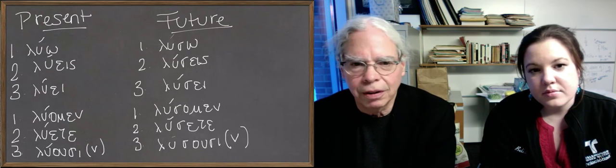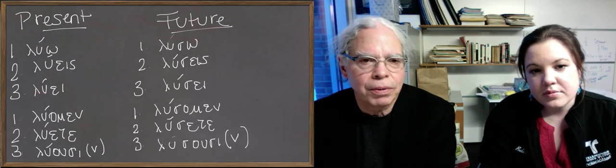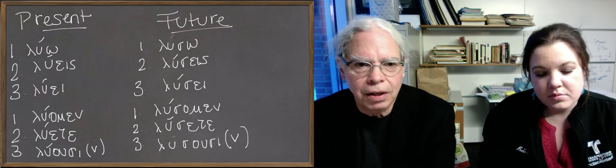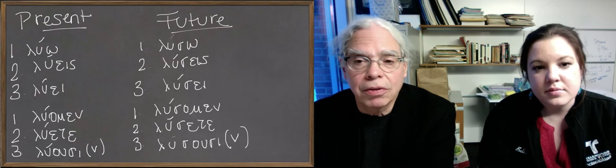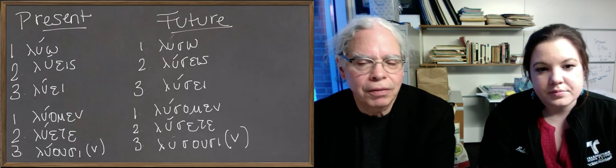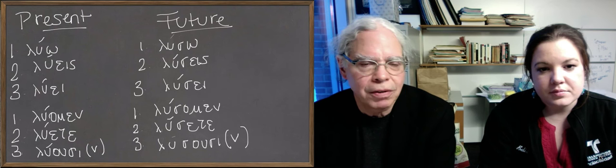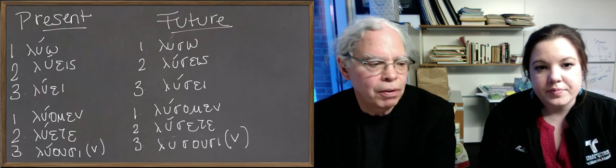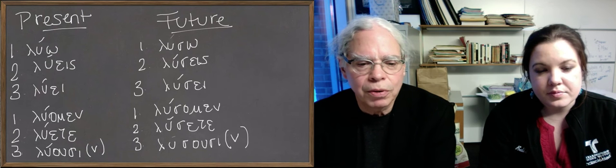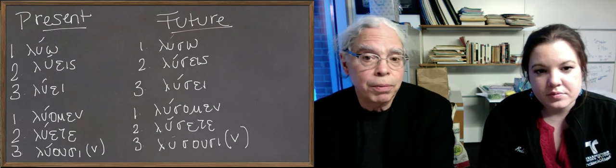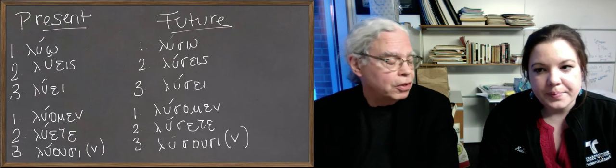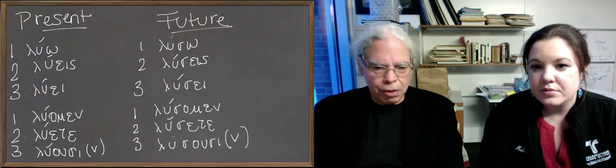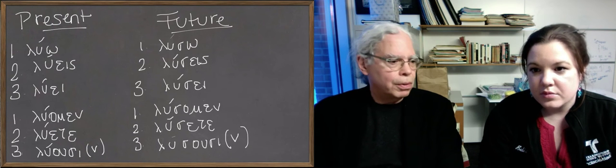If you look at the future, it's identical except that before the o, eis, e, omen, ete, ose, there's an s, a sigma. So effectively what makes the present into the future is the addition of the s at the end of the stem of the verb. The stem is really the imperfective aspect stem. It's what you get after you chop off the ending from the first principle part. So if it's paideu o, it's paideu; if it's lu o, it's lu.